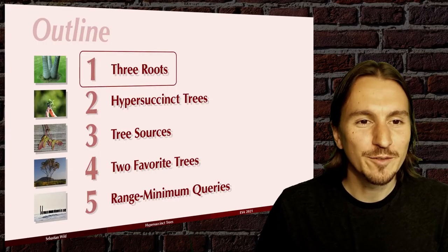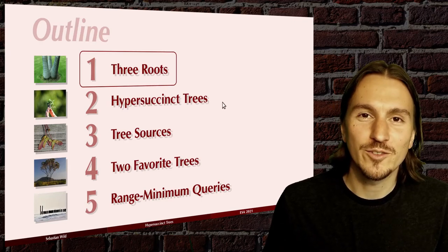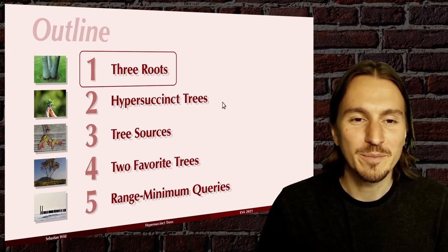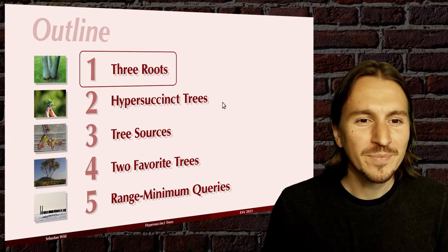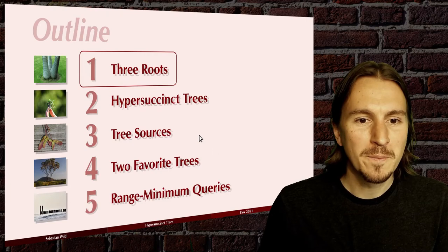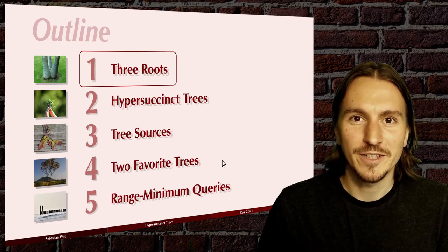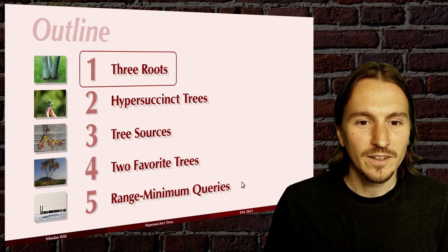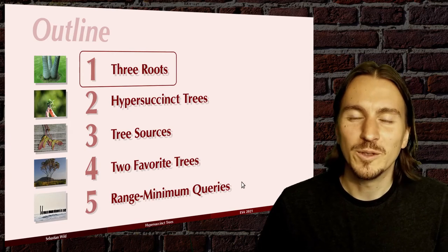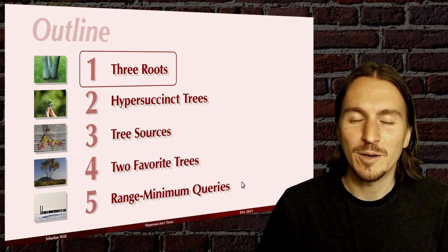Here's my outline for today. I will briefly discuss where this work comes from and then show what our hyper succinct trees are. We'll talk about tree sources and distributions over tree shapes, give two examples where we exemplify our analysis in detail, and finally apply it to get new data structure results for the RMQ problem.